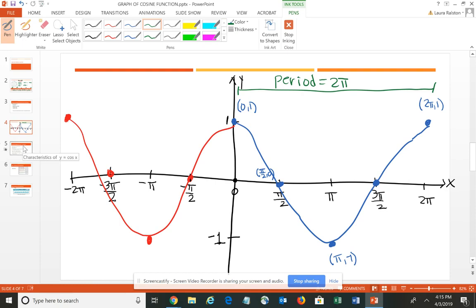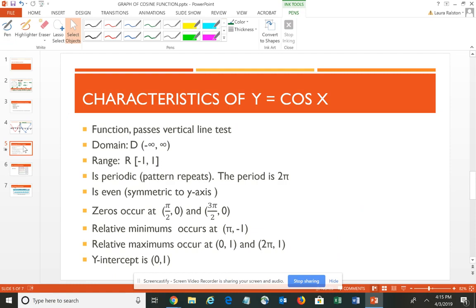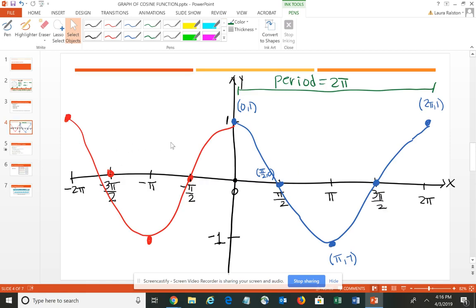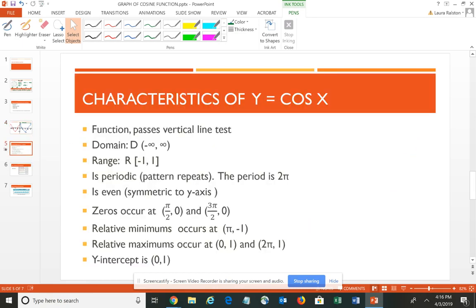So looking at those characteristics, notice it would pass the vertical line test, which makes it a function. Our domain is any real number, any angle measure we can think of. Our range is limited in the basic form to negative 1 to positive 1. It is periodic. It has that repeating pattern, and it takes 2 pi or a full revolution around the unit circle to see the pattern. The cosine curve is even – it is symmetric about the y-axis. Your zeros occur at pi halves and 3 pi halves. So every pi units, you have a zero. Your minimums occur at the odd values of pi. Your relative maximums occur at 0 and 2 pi, or even multiples of pi. And then your y-intercept is at 0, 1.